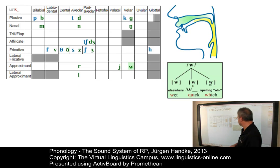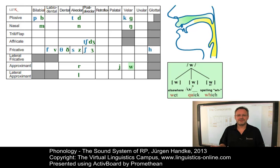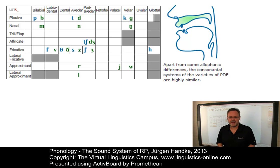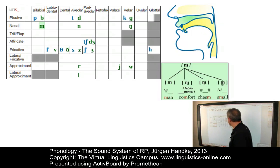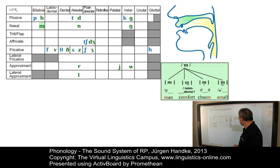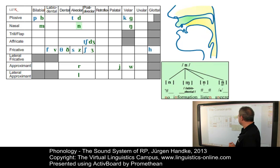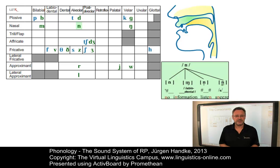The labiovelar approximant is another interesting case: it is contextually restricted in its allophonic structure and difficult to place on the consonantal chart since it is labiovelar — it has been placed in the velar box, even though it is classified as a labiovelar consonant. Additionally, the bilabial nasal has a labiodental allophone when followed by a labiodental fricative, as in 'comfort,' and the same applies to the alveolar nasal, as in 'information.'